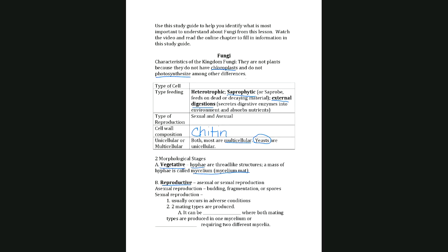The reproductive structure of a fungus can be asexual — one fungus produces spores — or sexual, with two different parents. Asexual reproduction can be budding, fragmentation, or spore formation. Fungi usually reproduce sexually when conditions are bad, under adverse conditions. There are two mating types: homothallic, where both mating types are produced in one mycelium mass, or heterothallic, where you have two separate mycelium bodies.